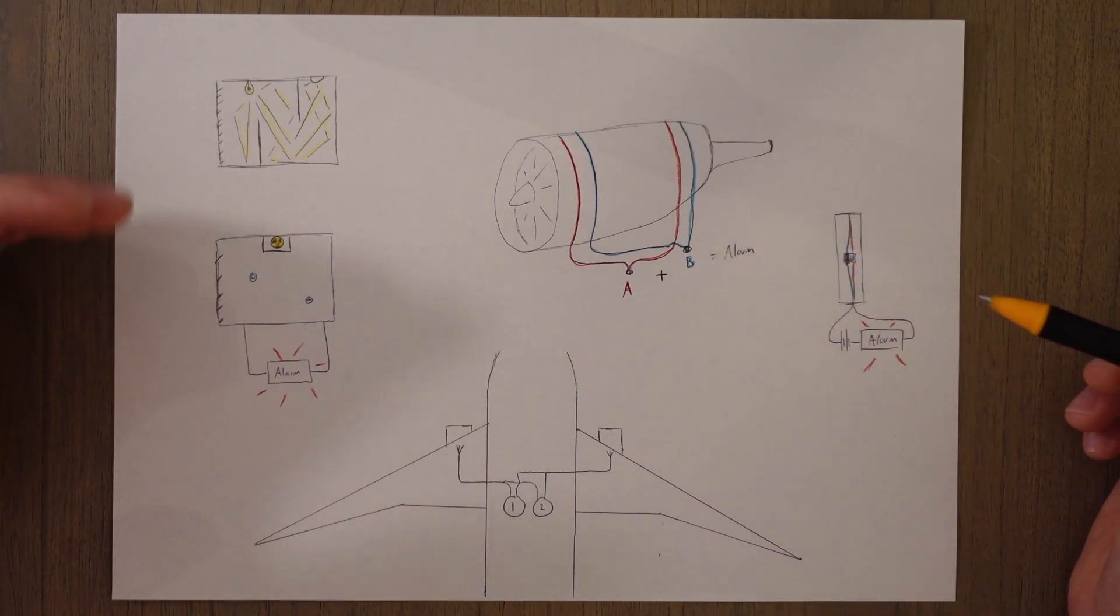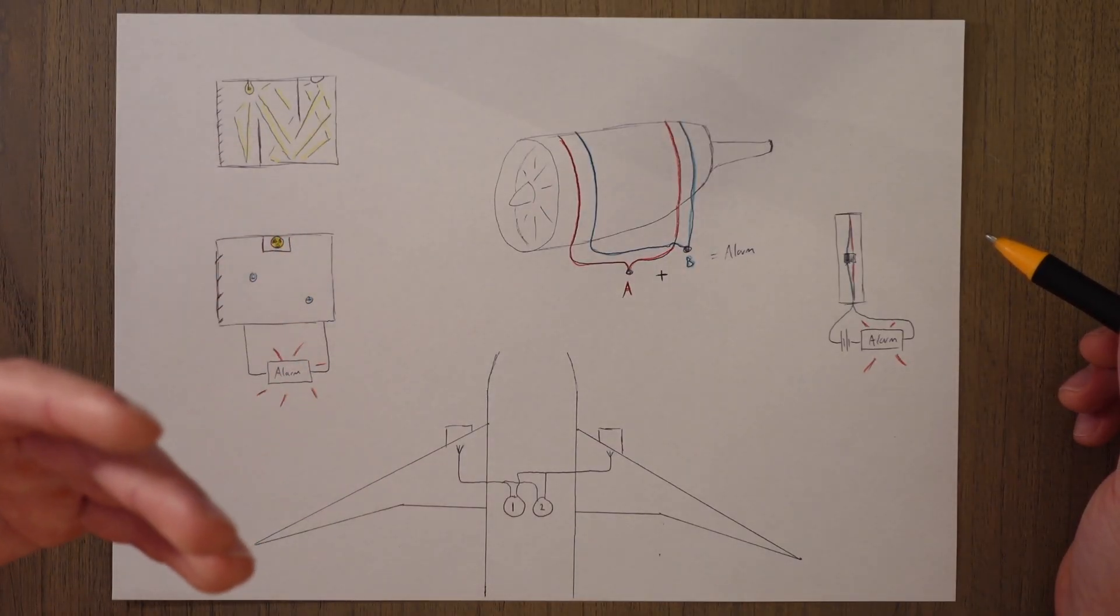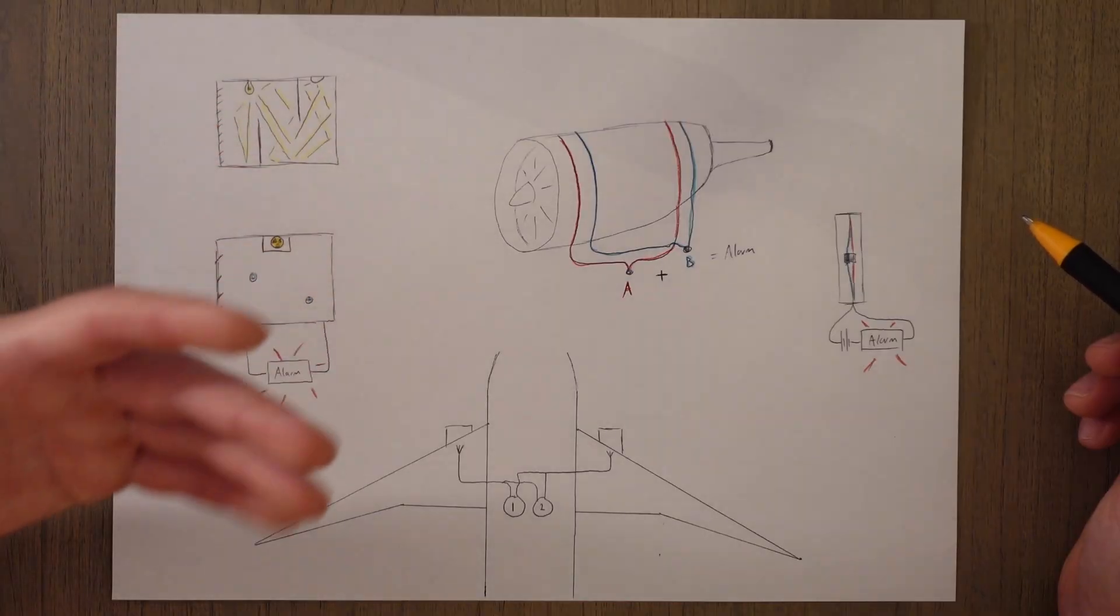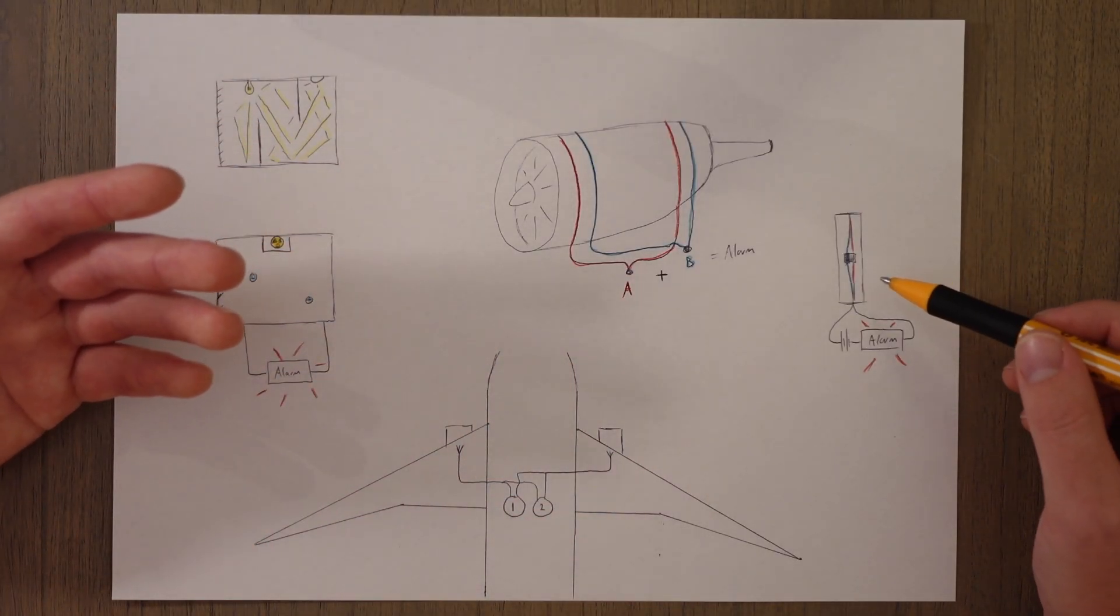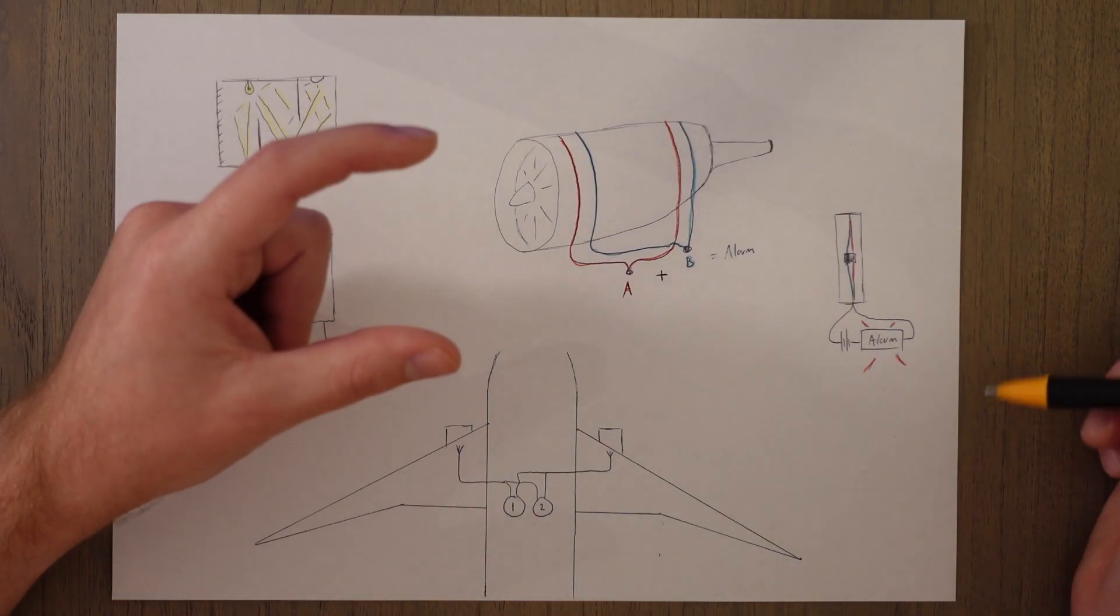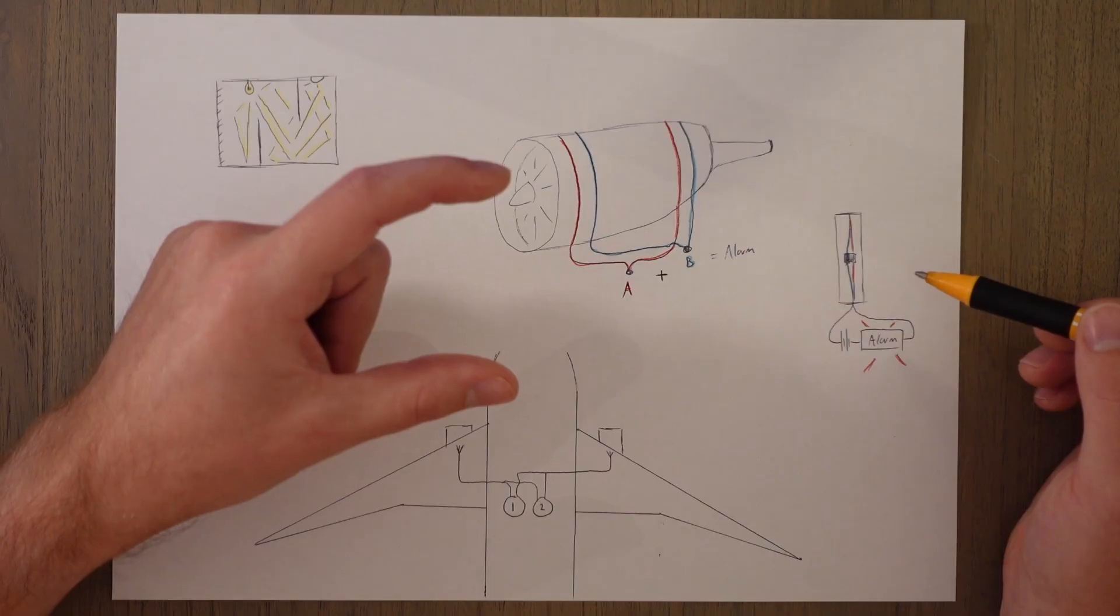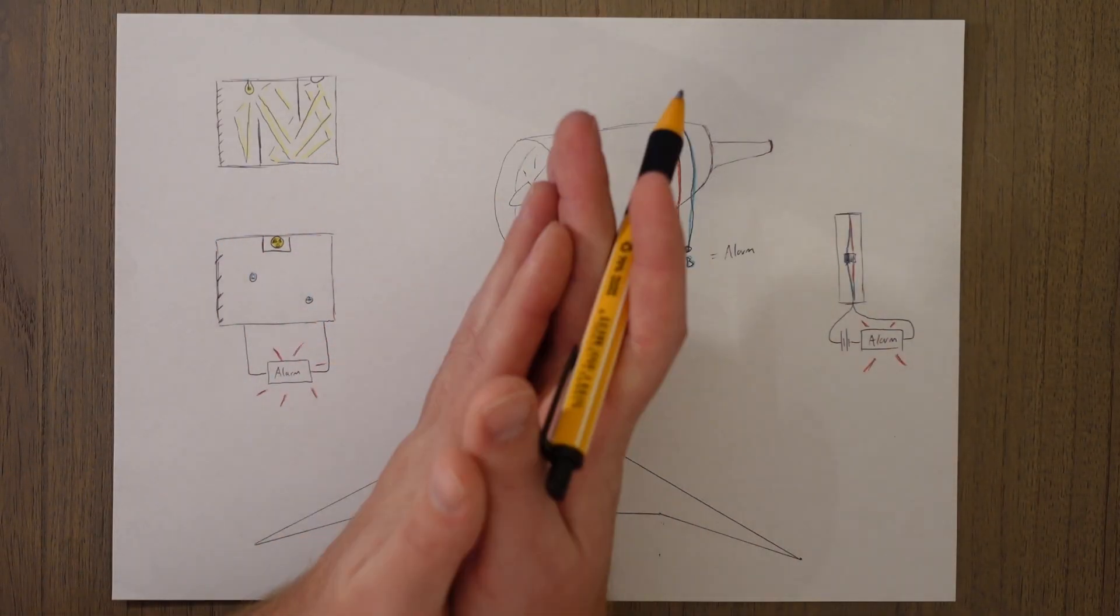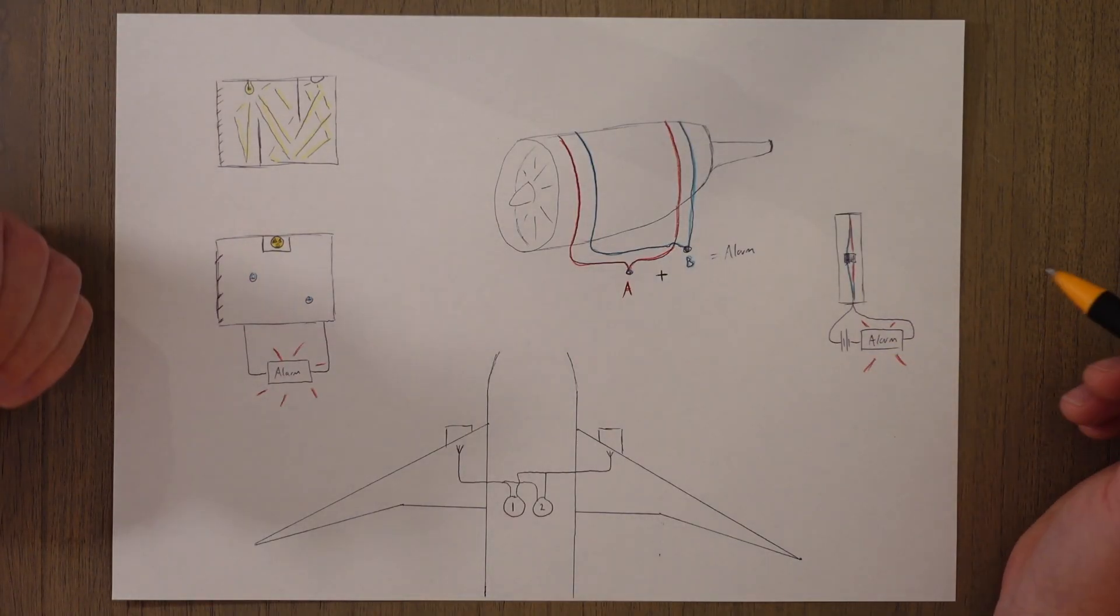We also have overheat detectors that we can use as well. They can be dotted around the engine in various locations or maybe in the bleed ducts, the wing anti-ice system, things like that might have overheat detectors. And this works on the principle of thermal expansion. You've got a tube with two metallic strips in it. As the temperature increases the tube stretches out and it pulls these metallic strips together. Once that connection is made it completes a circuit and sounds an alarm.